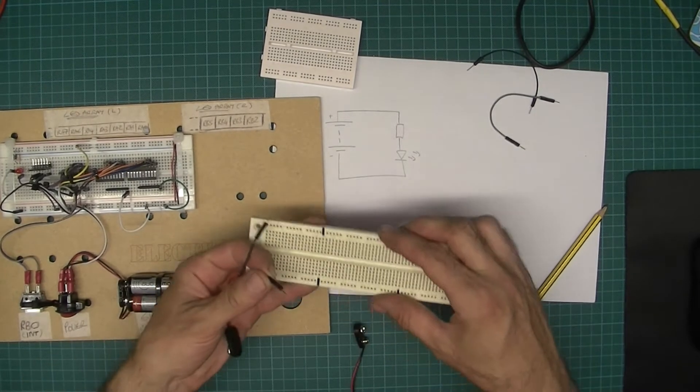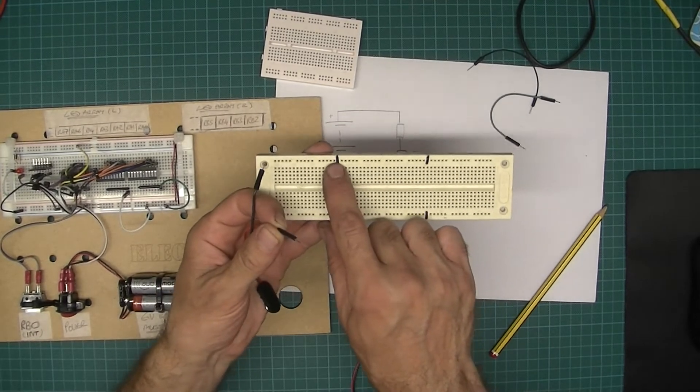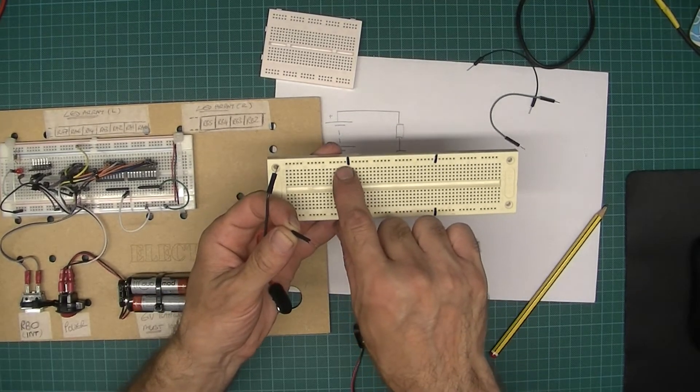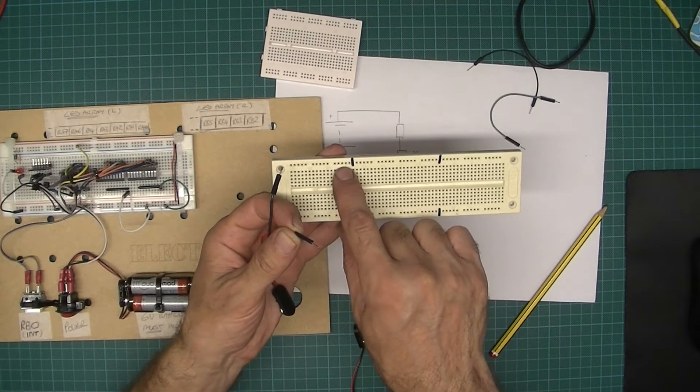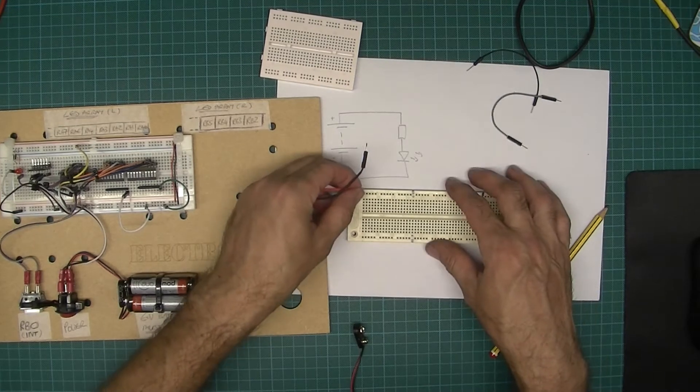Notice there's a long rail along the top and bottom. By the way, I've marked in pen just to remind me that if I want to continue this rail from this section to the next, I need to put a jumper there, but don't worry about that for the moment.